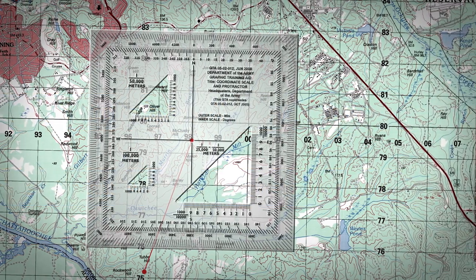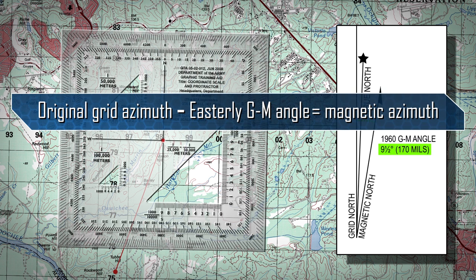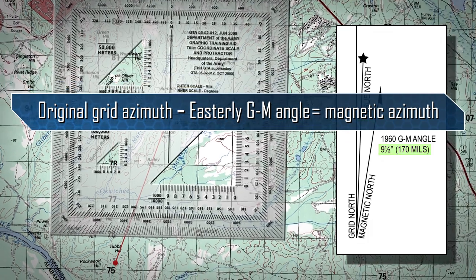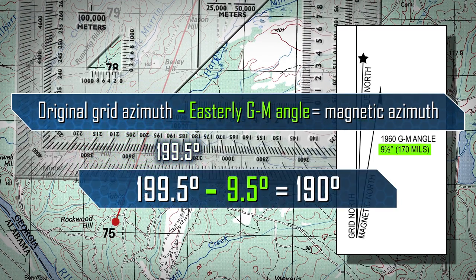In this example, the declination diagram on the map indicates the GM angle is 9.5 degrees. Because the GM angle is easterly, we will subtract to convert to a magnetic azimuth. Starting with a grid azimuth of 199.5 degrees, subtract the 9.5 degree easterly GM angle from the 199.5 degree grid azimuth. This results in a 190 degree magnetic azimuth.